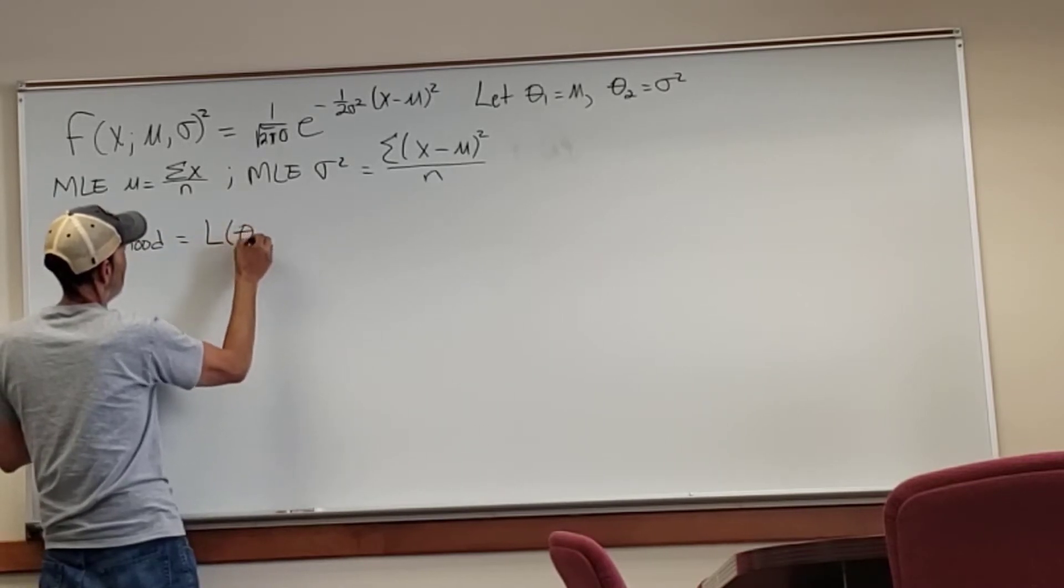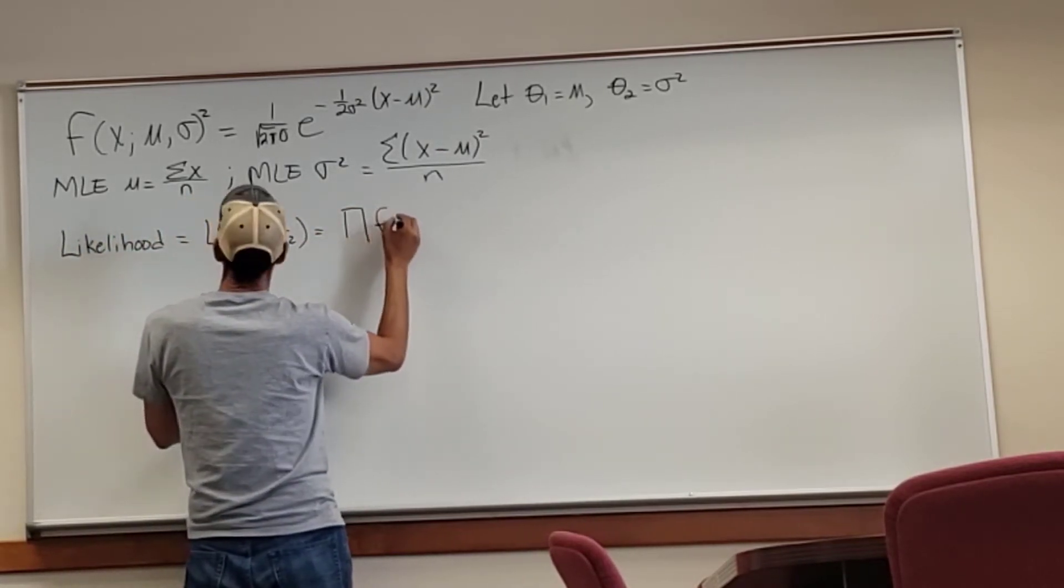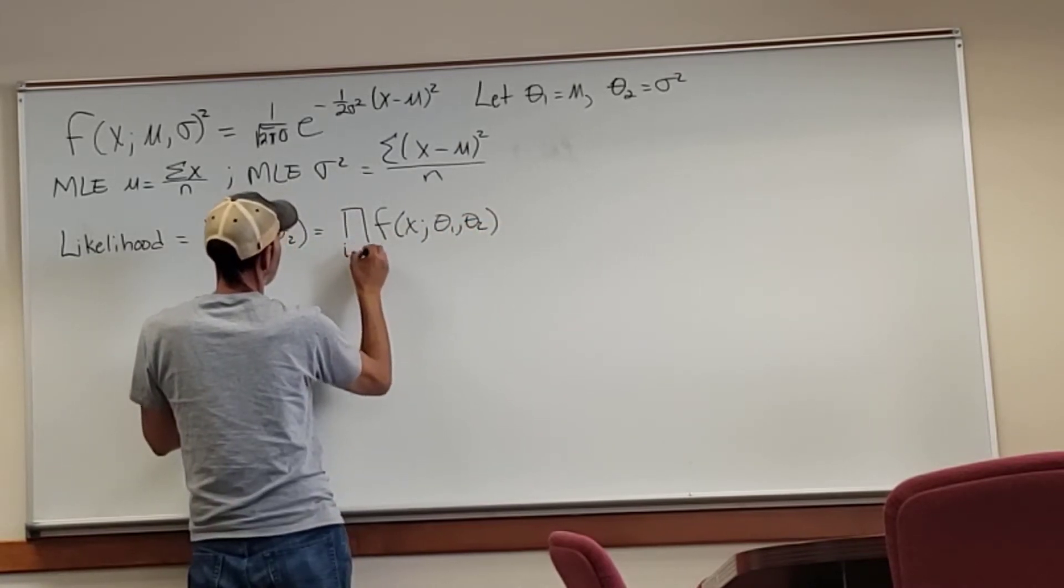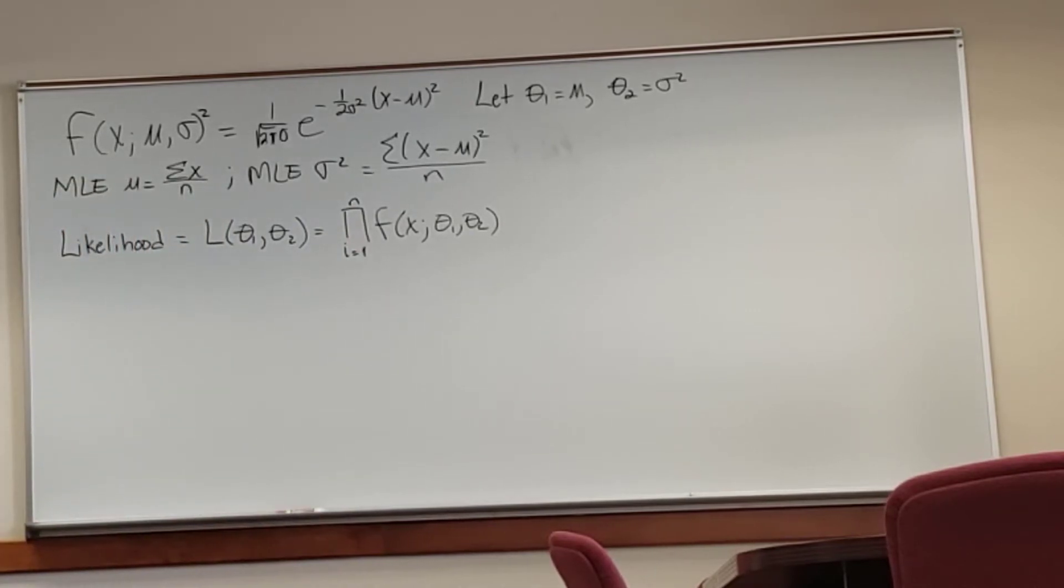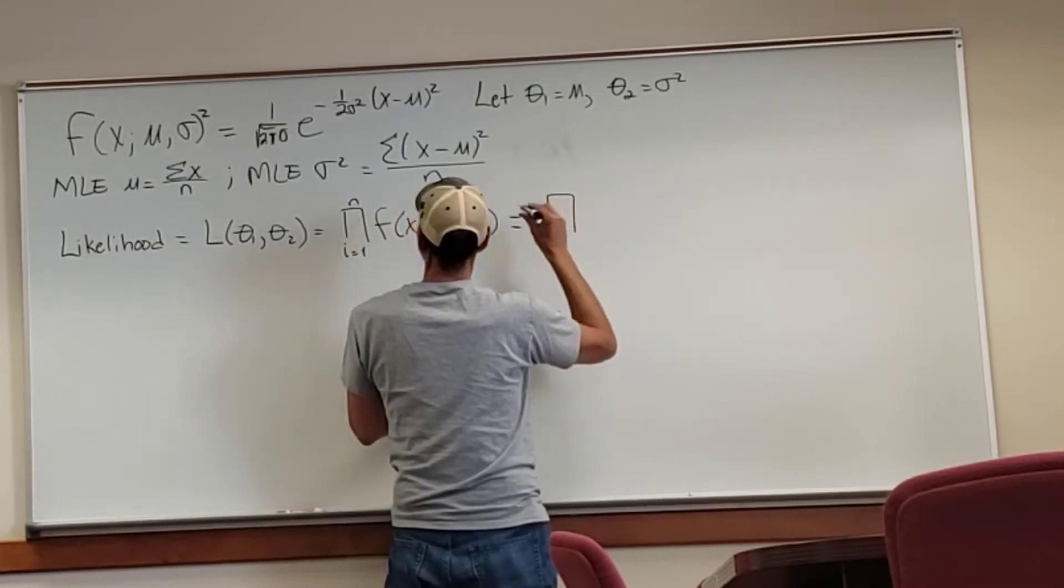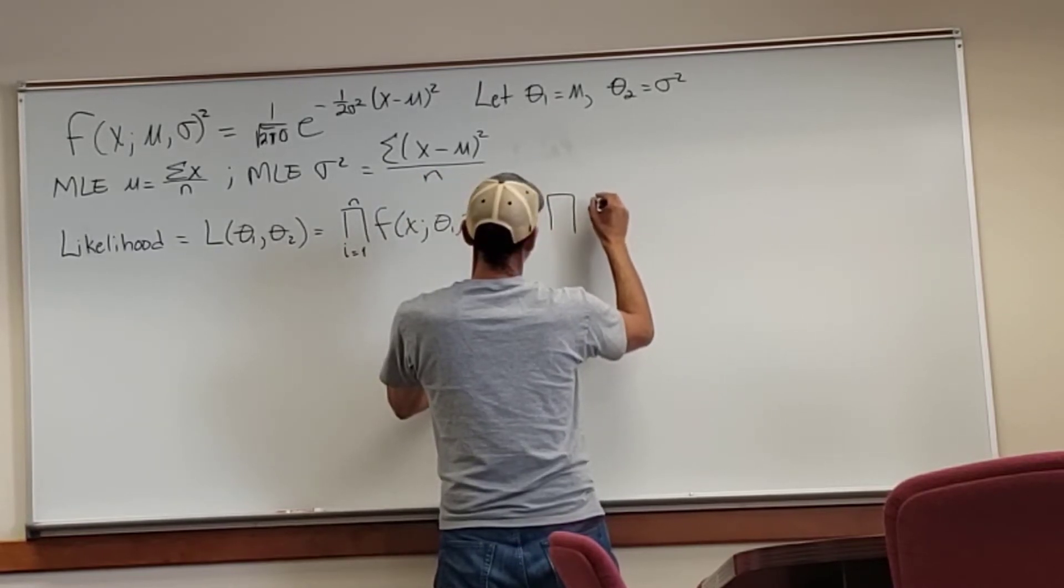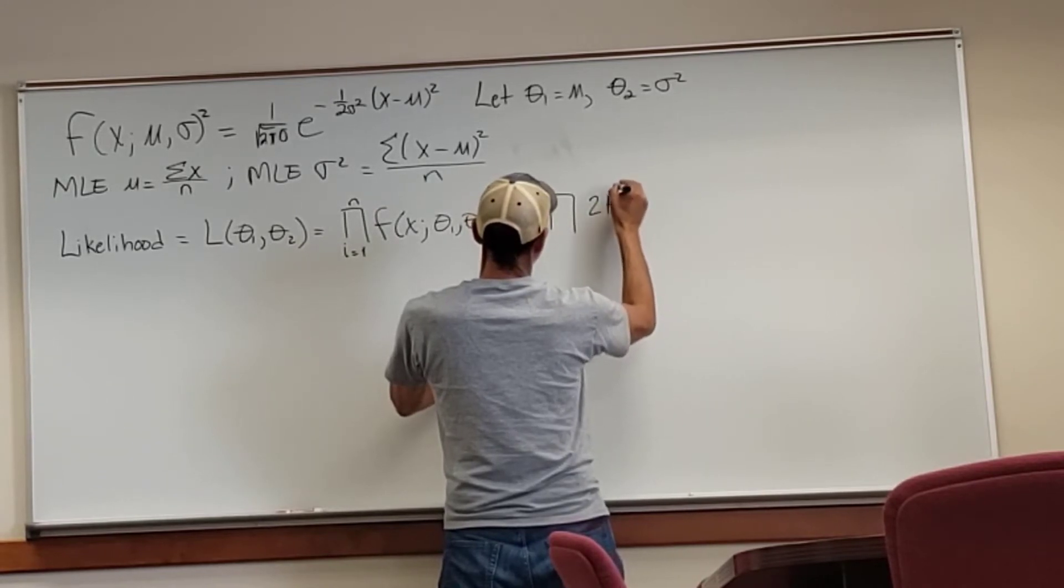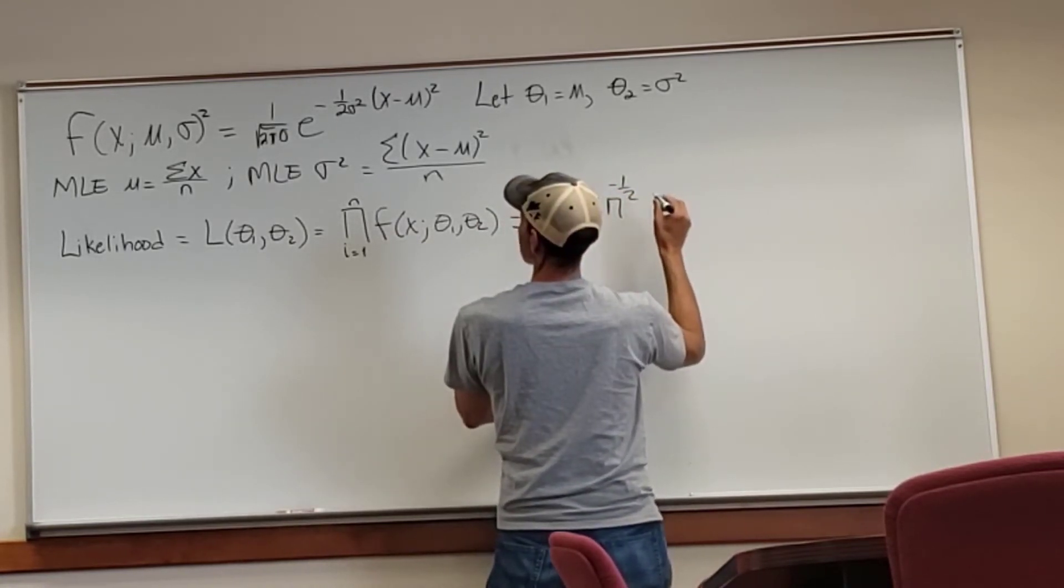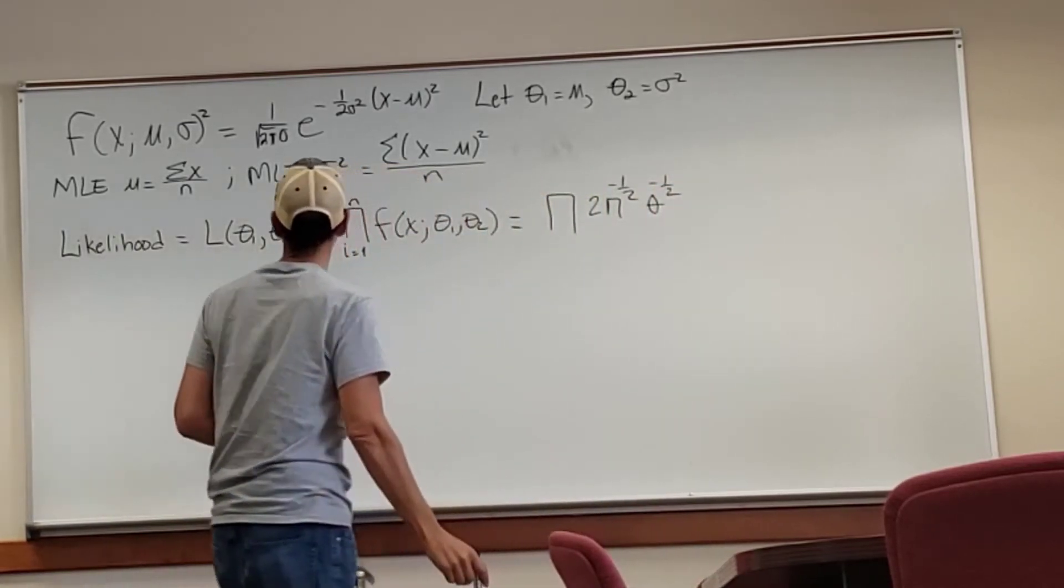Let's write the likelihood function, so it's the probability of the observed data given these unknown parameters. The unknown parameters are mu and sigma squared, even though we're assuming the data are normally, or we're considering a normal distribution. And that symbol that you may not recognize is a product symbol. So we're saying we're multiplying from i equals 1 to n, where there's n values in the population, and we're multiplying them. So the f of x, theta 1, theta 2, is the probability density function. It's a density function because we're dealing with a normal distribution.